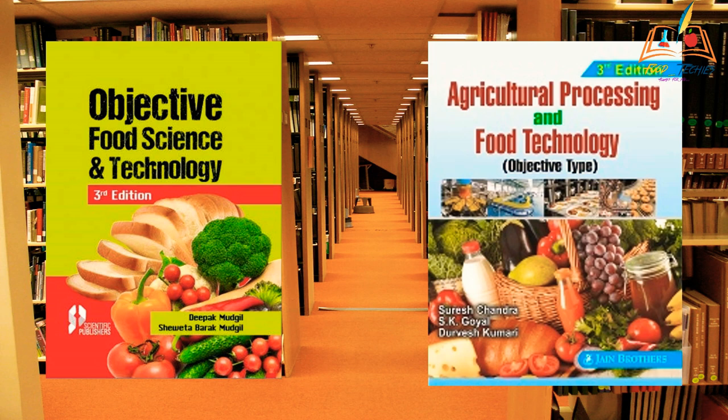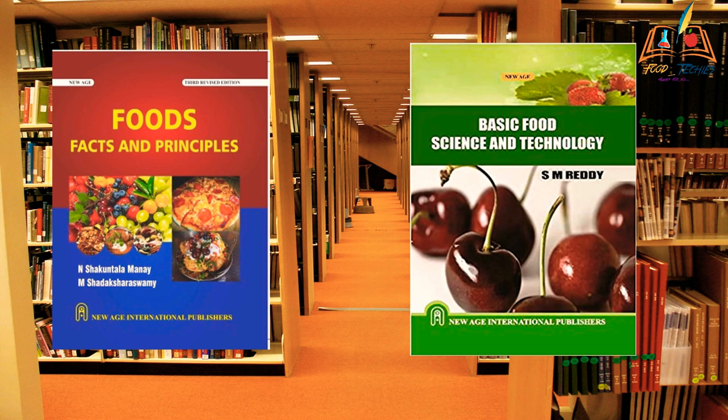For objective type books, we have Objective Food Science and Technology by Deepa Monglai, and Agriculture and Food Processing Technology by Suresh Chandra — these are the best books for not only GATE but other food exams as well. For subjective types, the basic book everyone knows is Food Facts and Principles by Shakuntala Manay, and Basic Food Science and Technology by S.M. Reddy.